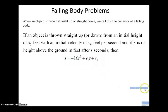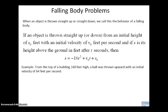Let's work an example and walk through all the different pieces. Falling body problems are generally going to ask you the same types of things. From the top of a building 160 feet high a ball was thrown upward with an initial velocity of 64 feet per second. So we can come up with the position function: negative 16t squared plus 64t plus 160 feet.